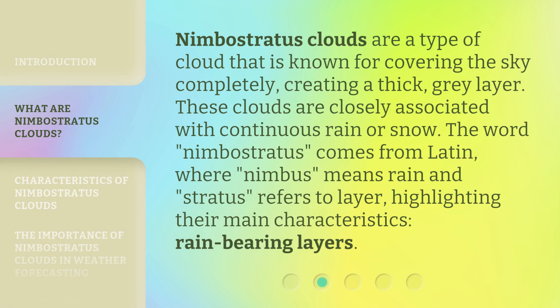Nimbostratus Clouds are a type of cloud known for covering the sky completely, creating a thick, gray layer. These clouds are closely associated with continuous rain or snow. The word Nimbostratus comes from Latin, where Nimbus means rain and Stratus refers to layer, highlighting their main characteristics: rain-bearing layers.